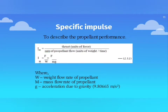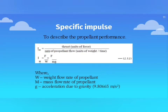Specific impulse is denoted as I_sp. It is derived from the formula: I_sp equals thrust divided by the rate of propellant flow, where W is the weight flow rate, M is the mass flow rate, and g is the acceleration due to gravity, the known value 9.80665 meters per second squared.